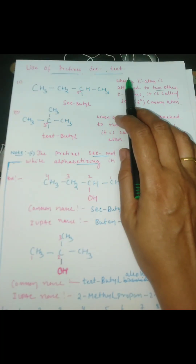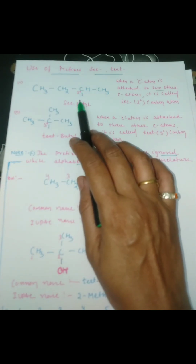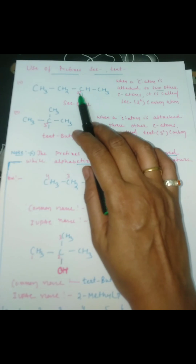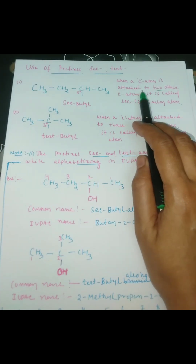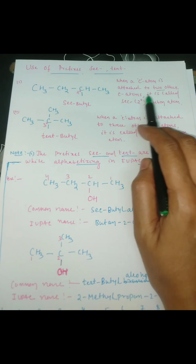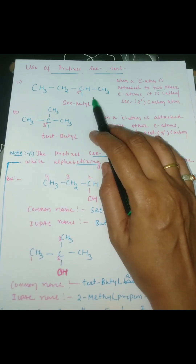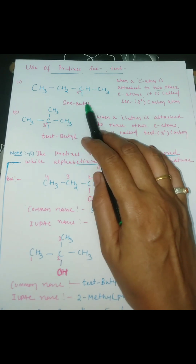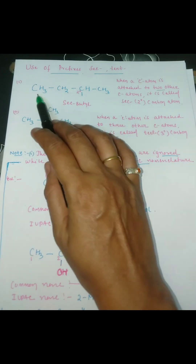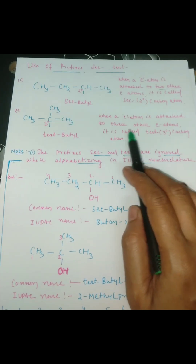We use the prefixes secondary and tertiary. This compound is secondary butyl. That means when the hydrogen is replaced from the secondary carbon atom. A secondary carbon atom is a carbon atom attached to two other carbon atoms. This carbon is attached to two other carbon atoms, so this is a secondary carbon, and because four carbon atoms are there, this is a secondary butyl group.